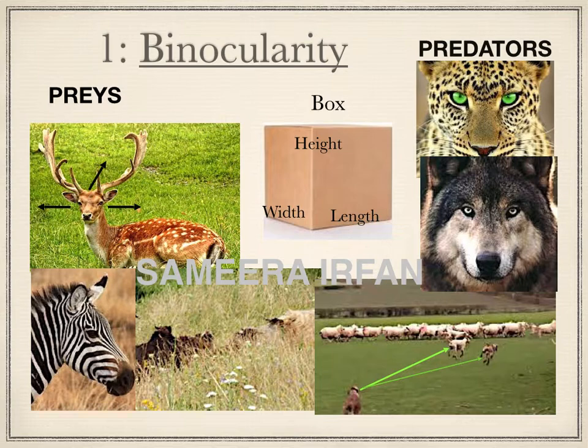To understand binocularity, let's take an example from the animal kingdom. Grass-eating animals like deer, zebra, and cow don't have to hunt for food as grass is readily available. They have eyes on either side of the face, which gives them a 360-degree view of the surroundings, so that while grazing they can detect an approaching predator from far away, giving them enough time to run.